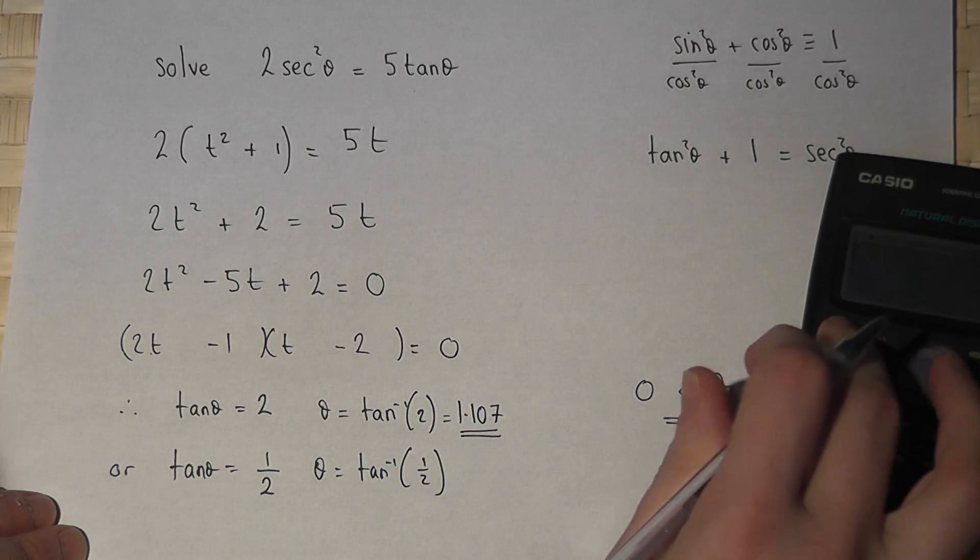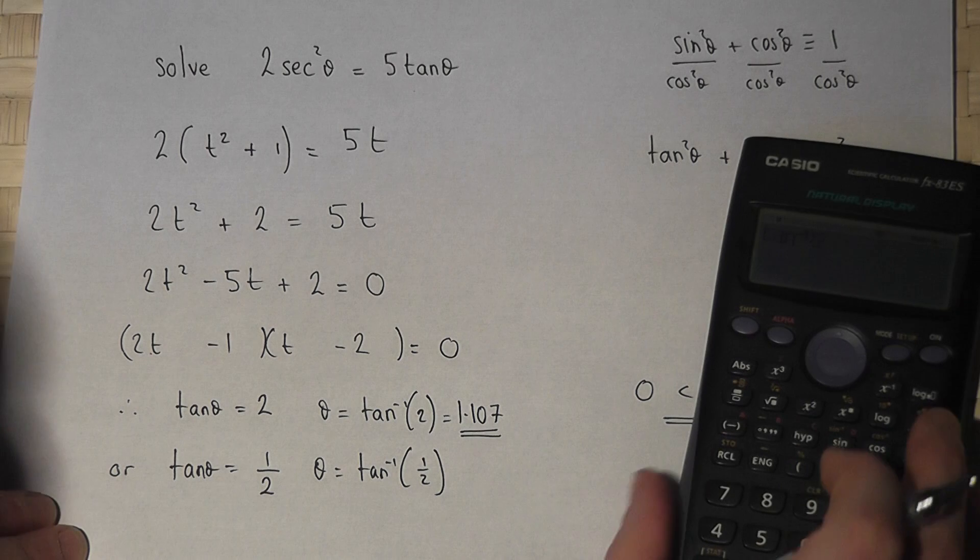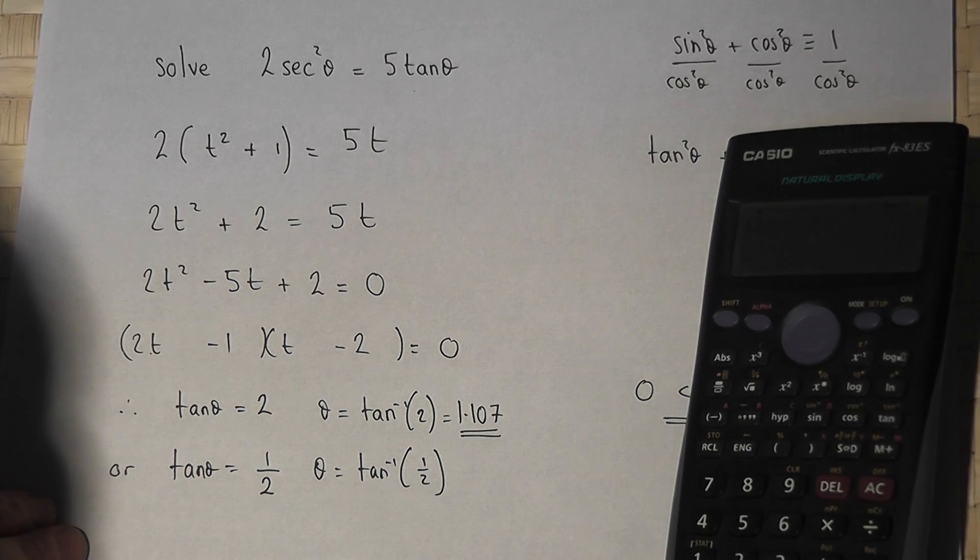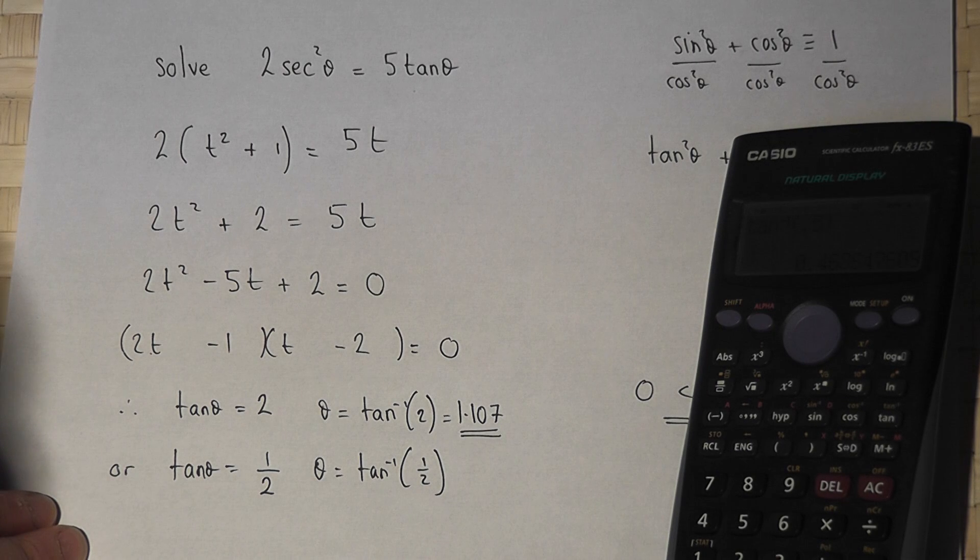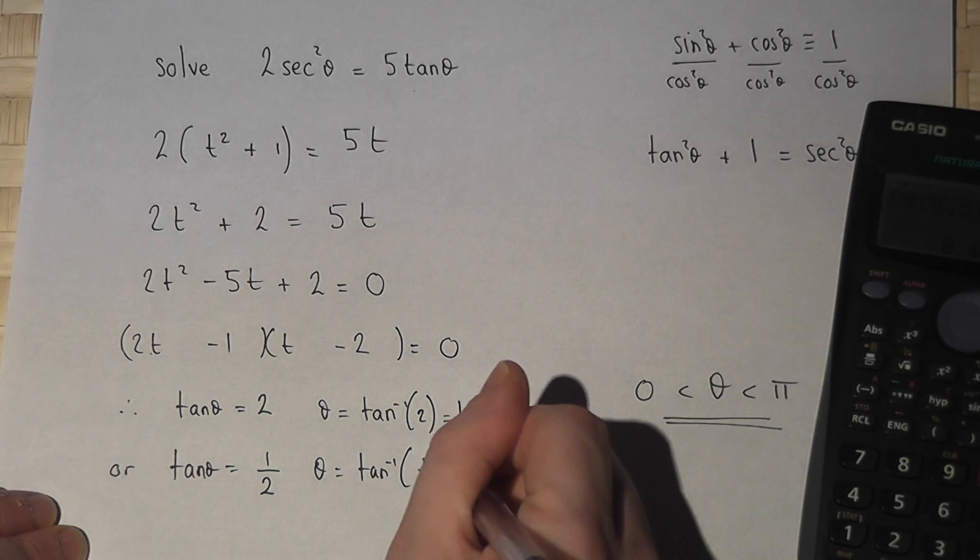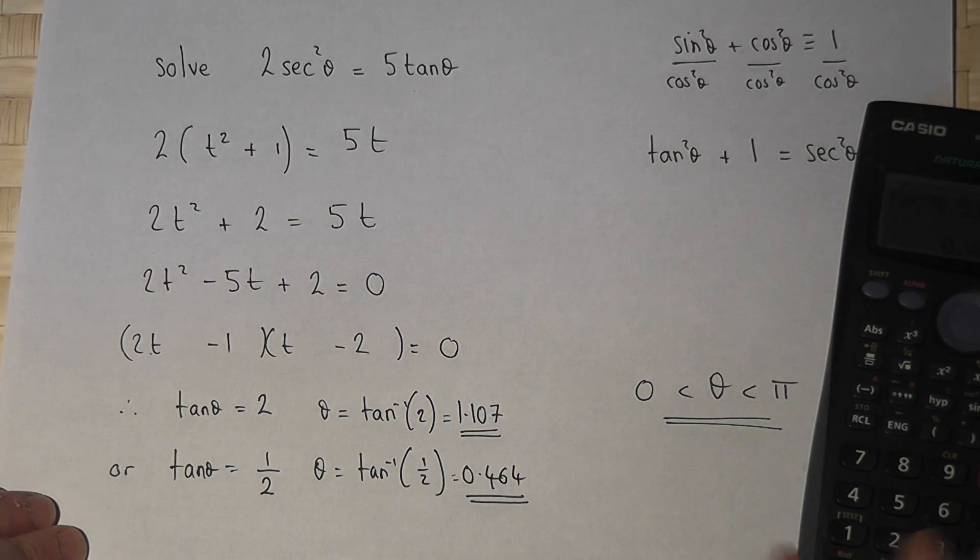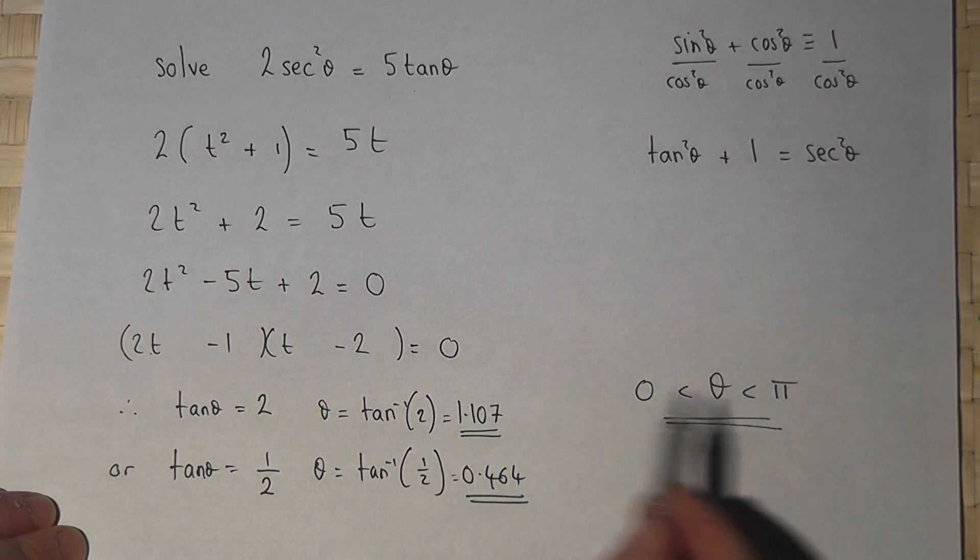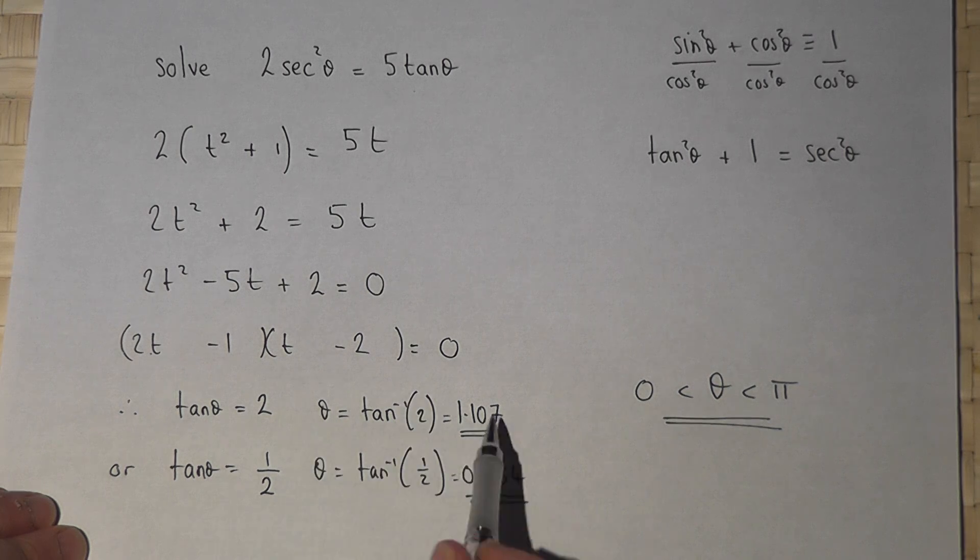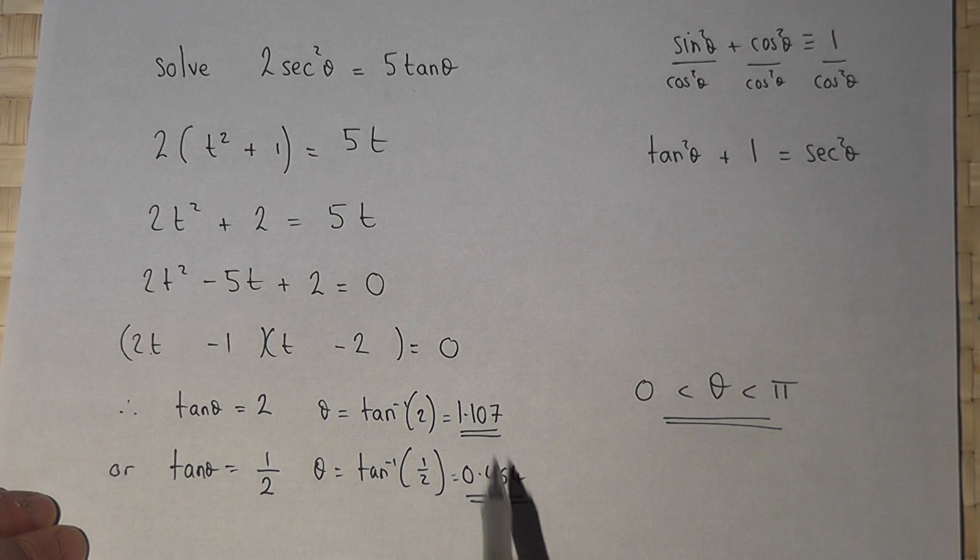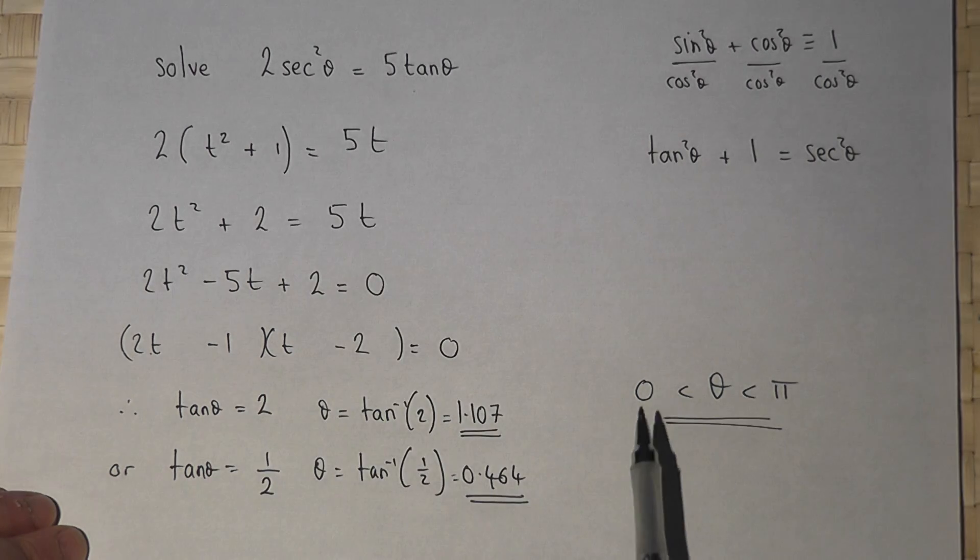And inverse tan of 1 half gives me 0.464. I can find more solutions by adding pi or subtracting pi, but that would take us beyond the given range for theta. So they are the two solutions for this equation in the given range for theta.